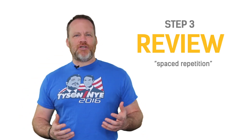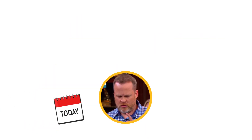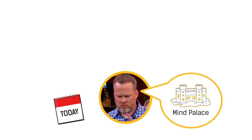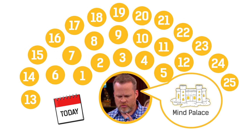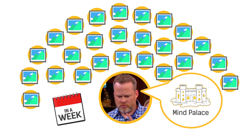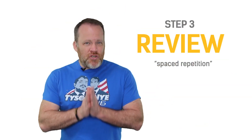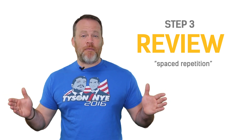The last step to putting something in your long-term memory is review — spaced repetition. What I like to do is memorize something today using my mind palace. I might have 25 or 30 things that I want to recall, turn them into a picture with action and emotion, and see them around my mind palace. I'll review them today, then tomorrow, then in a week, and then in a month. That spaced repetition will make sure it goes into your long-term memory.